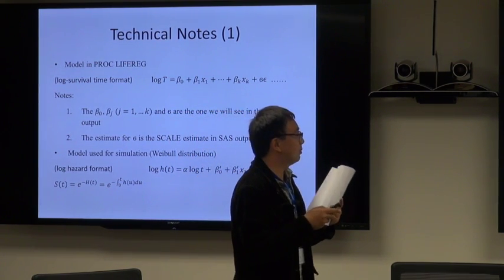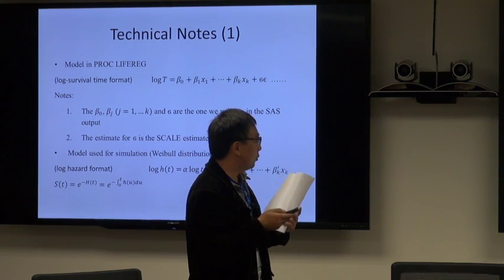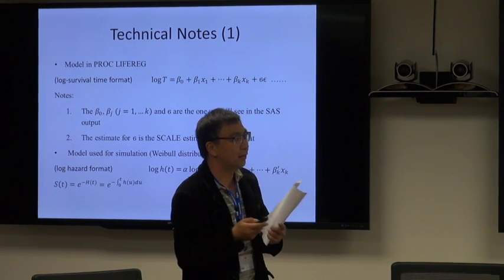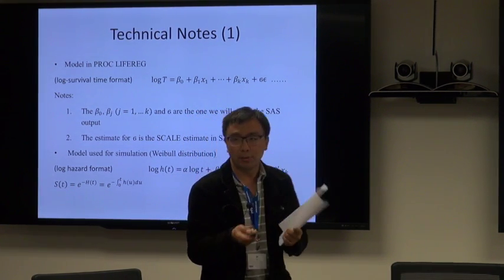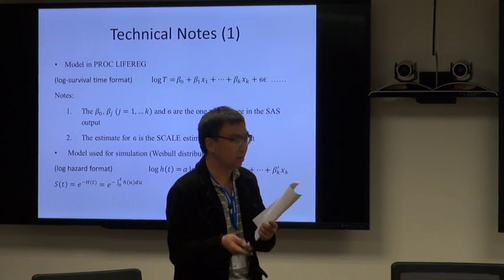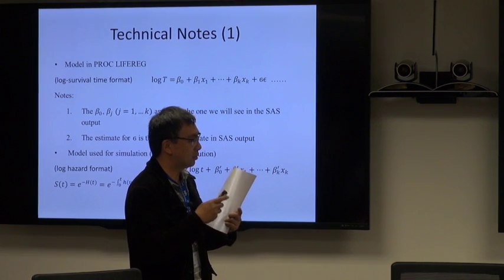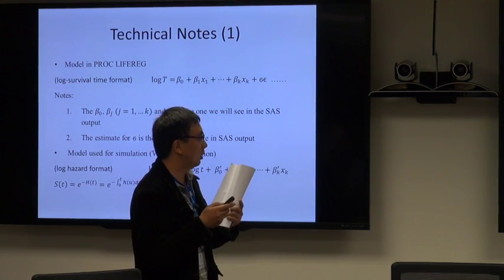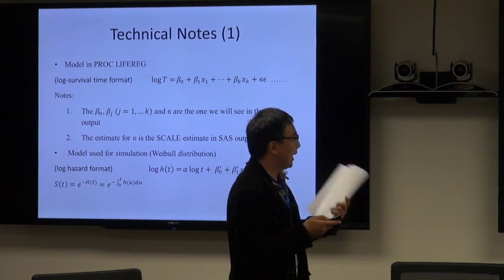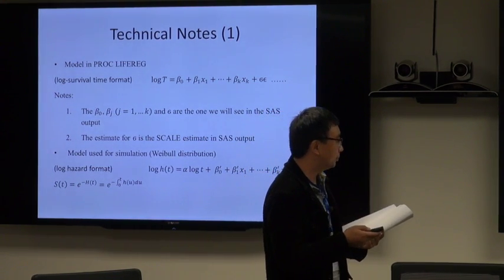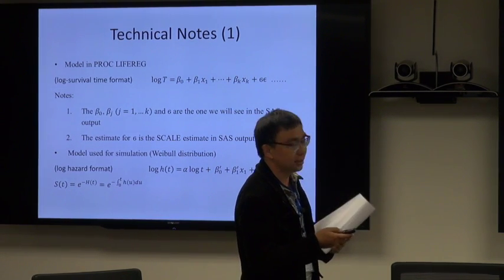But sometimes, for some certain distributions, it will be easier to simulate survival time if we have log-hazard format. That's because survival probability has a simple relationship with cumulative hazard. So if we simulate survival probability, we can go back to calculate the event time. The second equation basically is log-hazard format. On the left side you have log-hazard. The coefficients from those two formats are different.